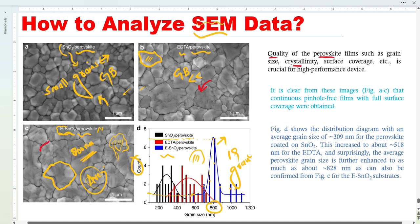The crystallinity is also related with the grain size. If we have large grain sizes, this means the material is more crystalline. So the crystallinity and grain size are basically directly proportional. We need this surface coverage, crystallinity, and grain size. How will we know? From SEM. It is clear from these images, from figure A to C, that continuous pinhole-free film with full surface coverage were obtained. This means that all three samples are very good - all three samples produce pinhole-free films.